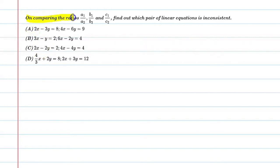On comparing the ratios A1 upon A2, B1 upon B2, and C1 upon C2, find out which pair of linear equations is inconsistent.